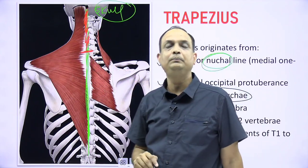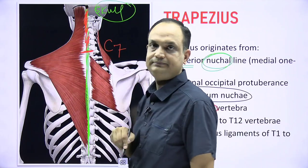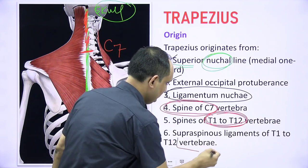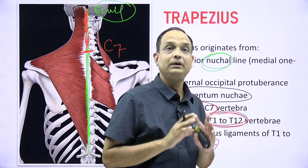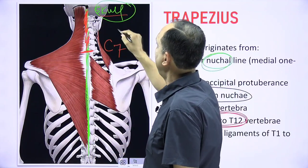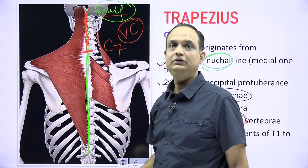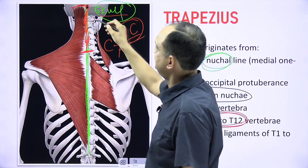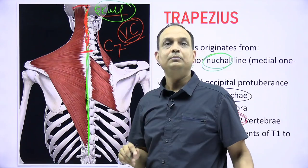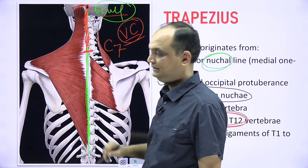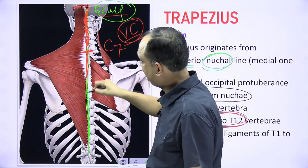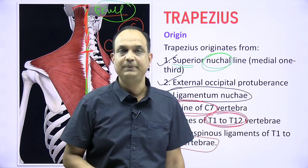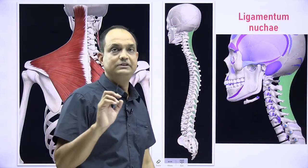Below C7, the origin comes from the spines and supraspinous ligaments of T1 to T12. So in summary, trapezius originates from the skull (external occipital protuberance and superior nuchal line), then from the ligamentum nuchae through C7, and then from the spines and supraspinous ligaments of T1 to T12 — with T12 being the lowermost origin of the trapezius.